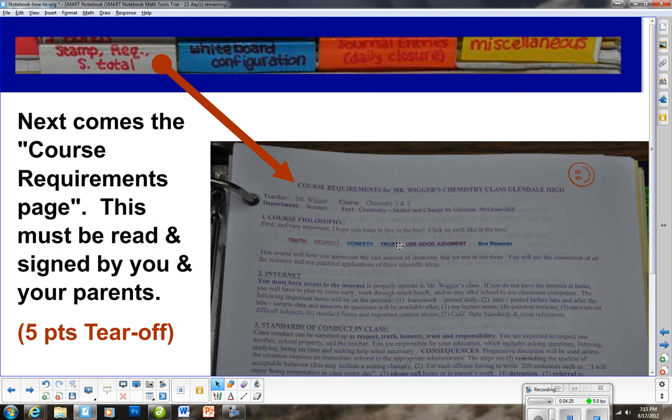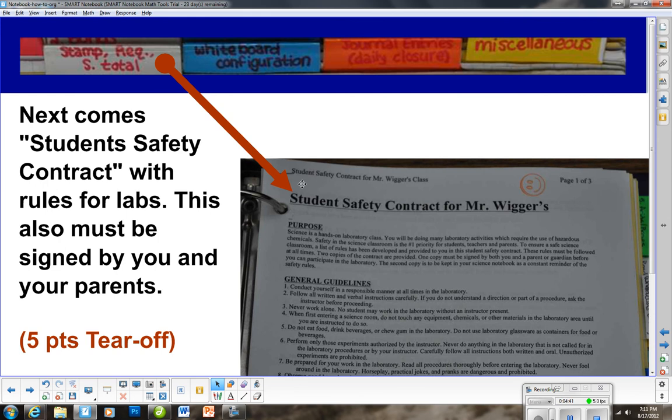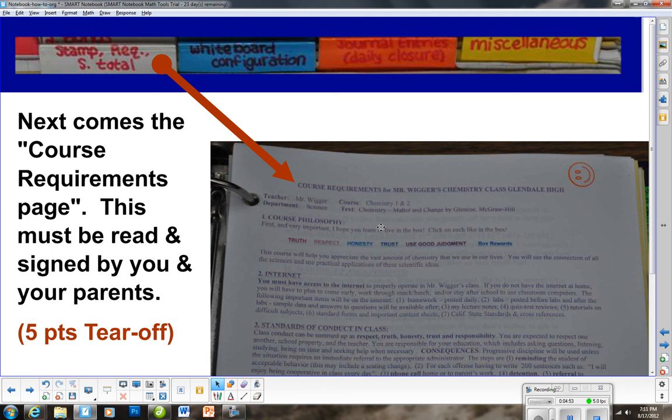Your course requirements sheet is the next thing after the stamp sheet. This guy is worth five points, not the printout, but the tear off form that's attached to the last page. That needs to be cut off and returned to me. If that's late, of course, it's only half credit. The course requirements tells what my grading system is, the cell phone policy, what happens with cheating. Pretty much everything is covered in there.